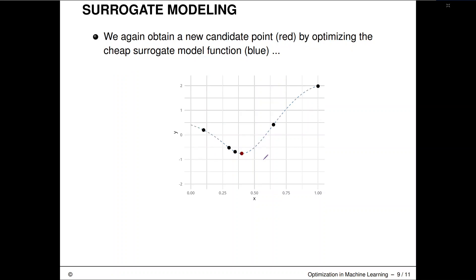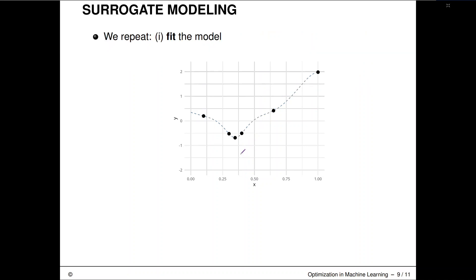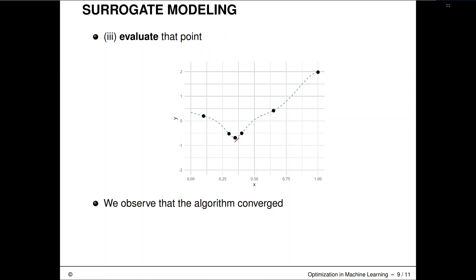Then I do exactly the same again: optimize my cheap surrogate model, get a new point, evaluate that on the expensive black box, adapt my function, propose a new point. In this instance, I'm seeing that I'm proposing either exactly or nearly exactly the same experiment I've seen before — so I've converged and I will not go on.